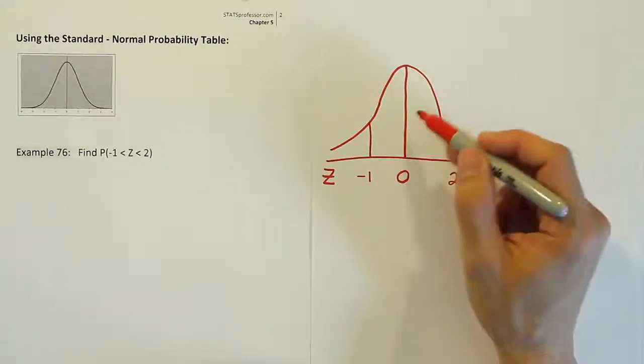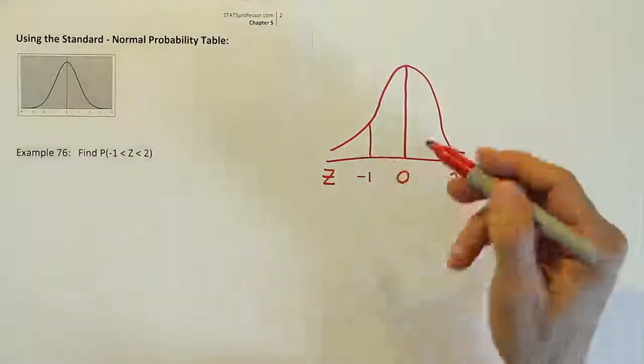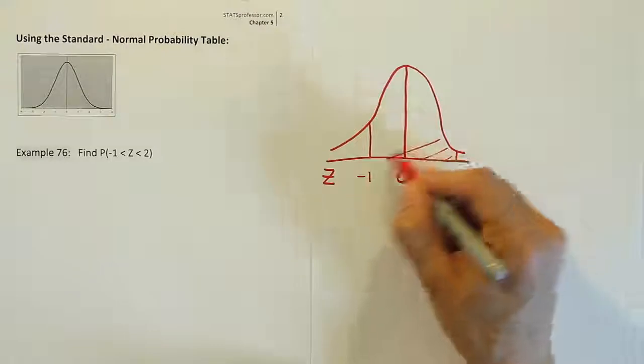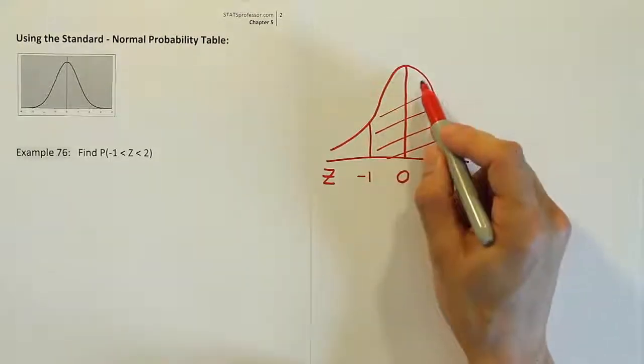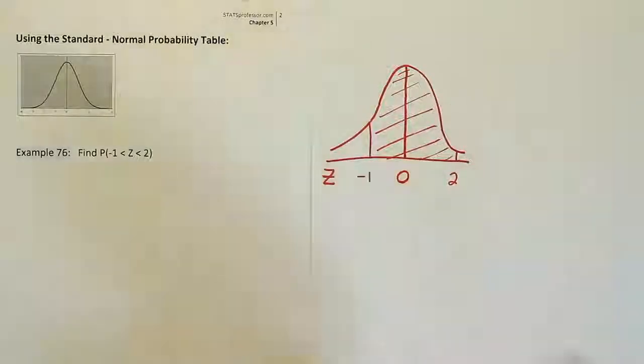And then we want to shade the area we're looking for. Now this is saying we're looking for the area between these two numbers, so I will shade between the two numbers on my table. What I'm doing here is I'm letting myself know I need to find the area for all of this shaded region. That's the solution to the problem.